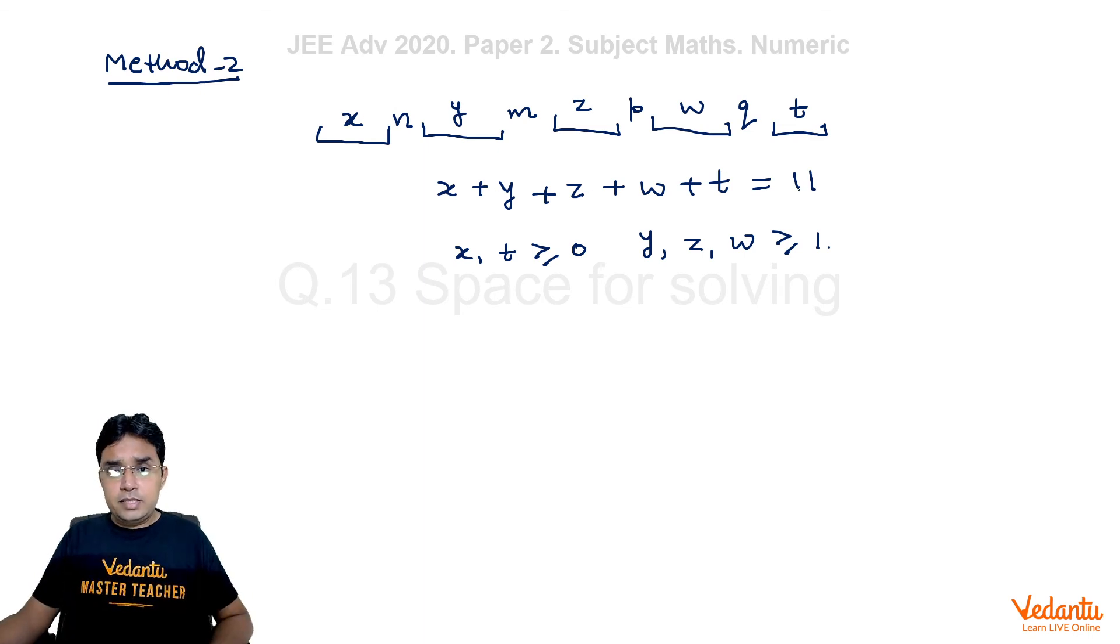Now, this is similar to non-negative integral solutions of a linear equation which we can write directly. But here Y, Z, W are greater than or equal to 1. So let me take Y as Y0 plus 1, Z as Z0 plus 1, and W as W0 plus 1. Why am I taking this? If we substitute this here, we will get a new equation X plus Y0 plus Z0 plus W0 plus T and that will be equal to 8.